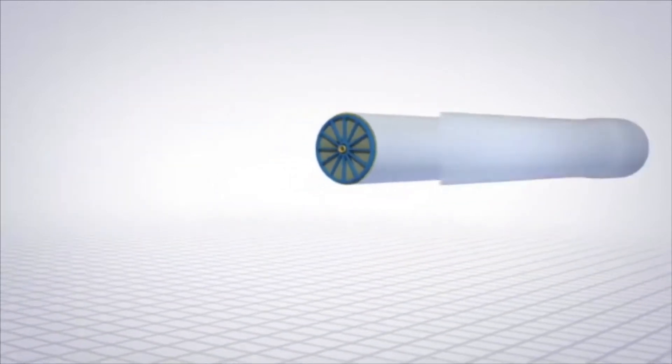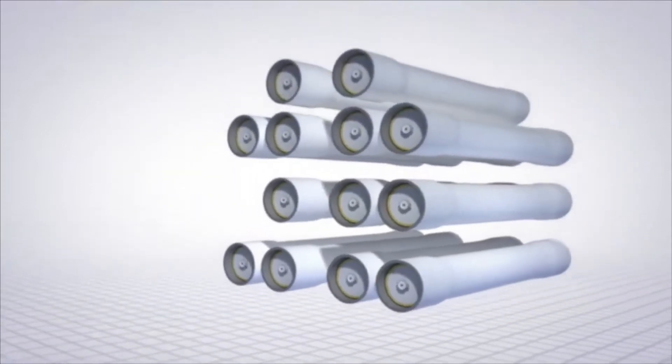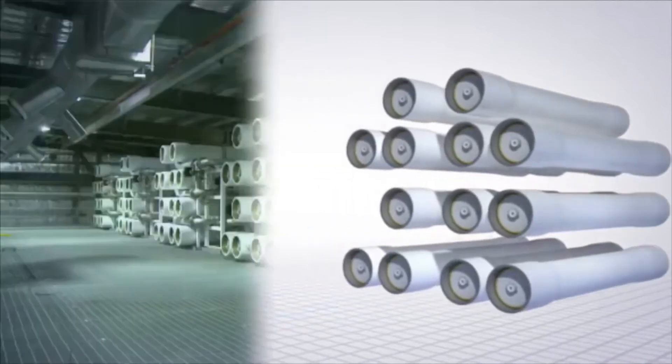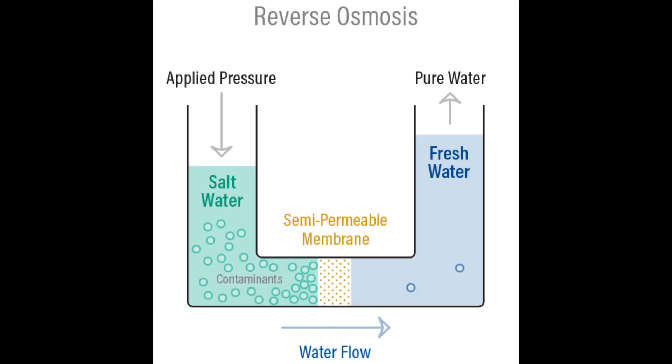The pure permeate water flows out the core tube at one end of the pressure vessel and the concentrate water flows out another outlet. The concentrate water can then flow into other pressure vessels for the same process to happen again so even more pure permeate water can be recovered.